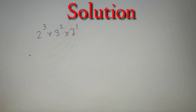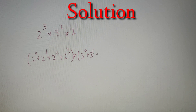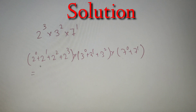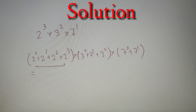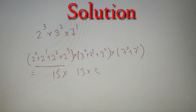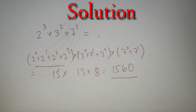The sum of factors is (2⁰ + 2¹ + 2² + 2³) × (3⁰ + 3¹ + 3²) × (7⁰ + 7¹). The first bracket equals 2⁴ − 1 = 15, using the formula that the sum of powers of 2 from 0 to n is 2^(n+1) − 1. The second bracket gives 1 + 3 + 9 = 13, and the third gives 1 + 7 = 8. So the final value is 15 × 13 × 8 = 1560. Therefore the sum of reciprocals of all factors for this number is 1560/x, where x is the number.